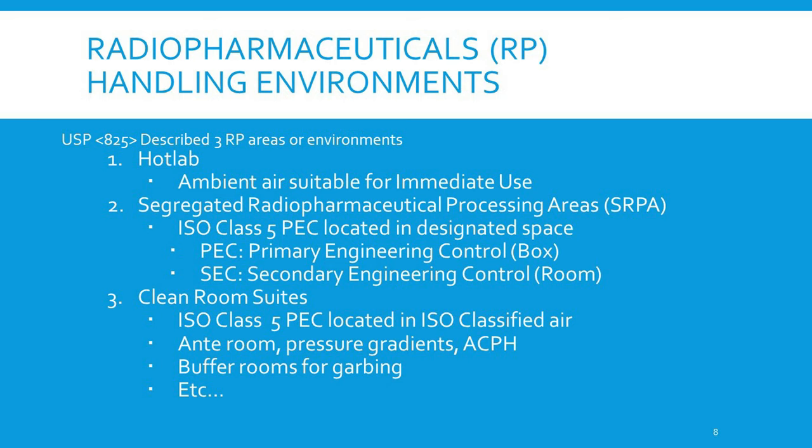USP 825 describes three radiopharmaceutical areas of environment. First, the hot lab, which is ambient air suitable for immediate use. Second, segregated radiopharmaceutical processing areas (SRAP), with an ISO Class 5 PEC — a primary engineering control, essentially a hood — located in a designated space. Third, clean room suites with an ISO Class 5 PEC located in ISO-classified air. The SEC is the controlled room itself.